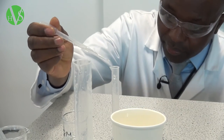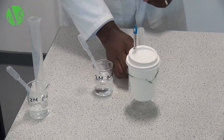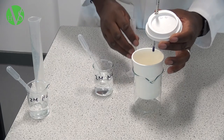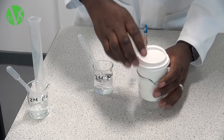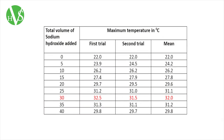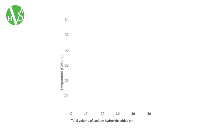We continue adding 5 ml of sodium hydroxide every time and then record the maximum temperature reached. We repeat this experiment twice so that we've got two values, and then in the third column we get a mean of the two values. The reason why we do it twice and then get the mean is so that the results appear more repeatable but also more accurate. We can then plot a graph with the mean maximum temperature in degrees Celsius on the y-axis and the total volume of sodium hydroxide added in cm³ on the x-axis.